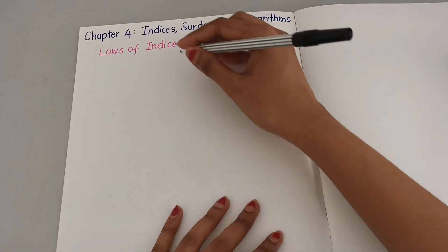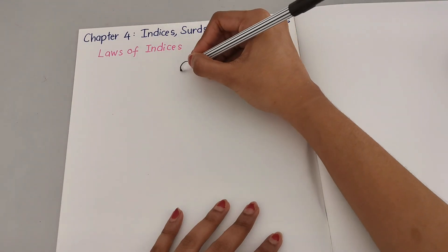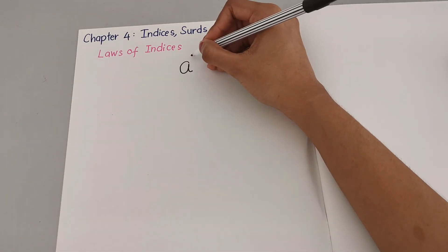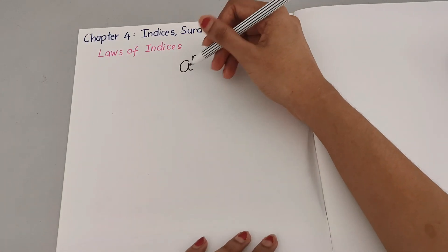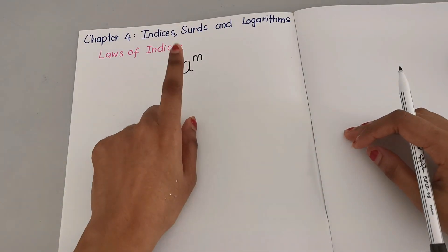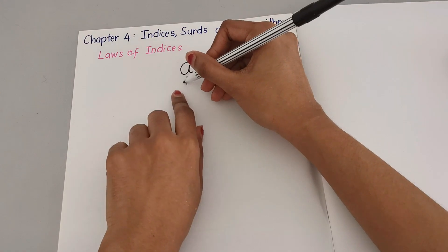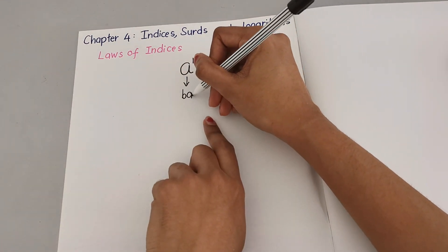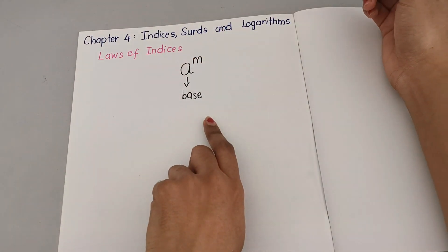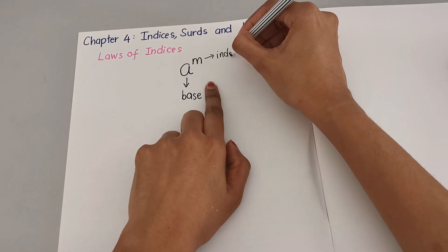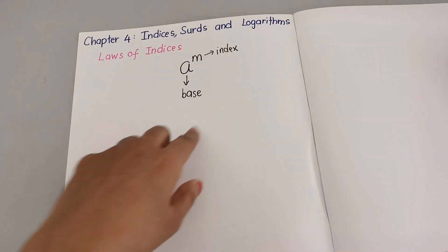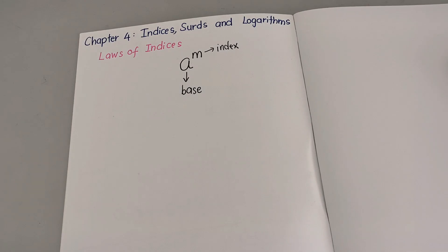First you need to know that when you have a number and when you have a power, I'm going to write it in terms of letters. The number is known as the base, and the power will be known as the index. So knowing this, now let me go through the laws one by one.